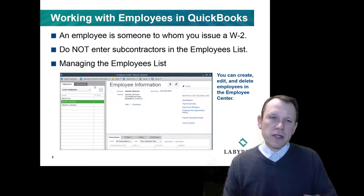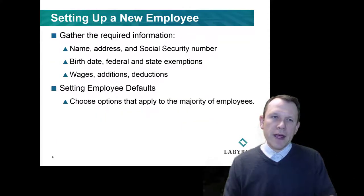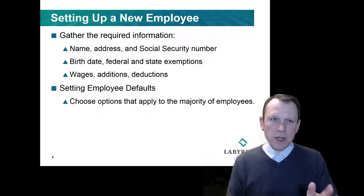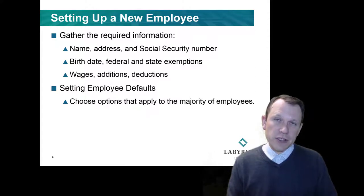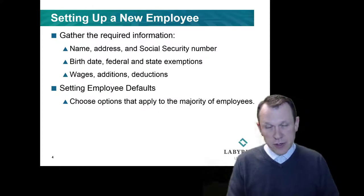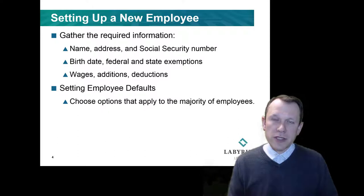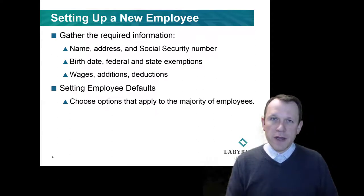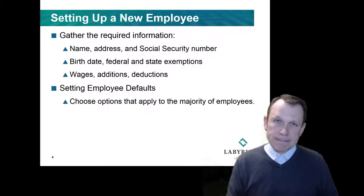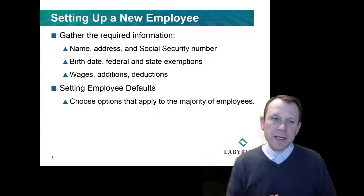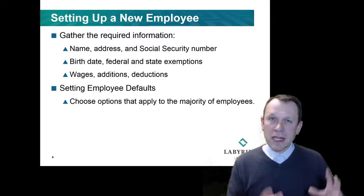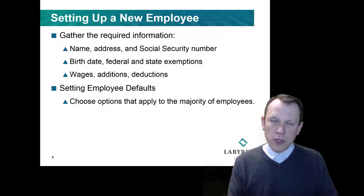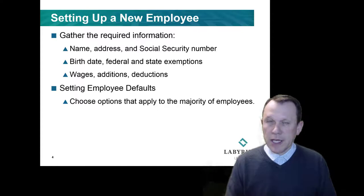We have our employee list we can pull up and work with in QuickBooks. The information we put in for an employee includes their name, address, and social security number — key information for reporting taxes. We also need to include wages, additions, and deductions. Additions and deductions are things beyond the wage: additional income, and deductions like insurance and child support. We also set employee defaults depending on the class of employee.